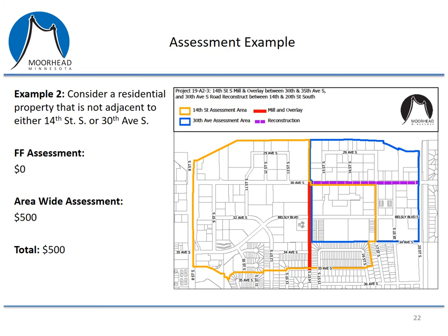For the last example, we'll consider a residential property that is not adjacent to either 14th Street South or 30th Avenue South — not within the project areas for either the mill and overlay or the reconstruction. For them, the only assessment they would receive would be an area-wide assessment of $500. They would not be receiving a front footage assessment because they're not adjacent to the work.